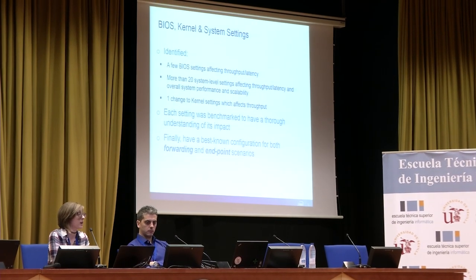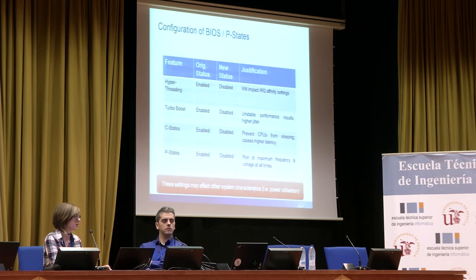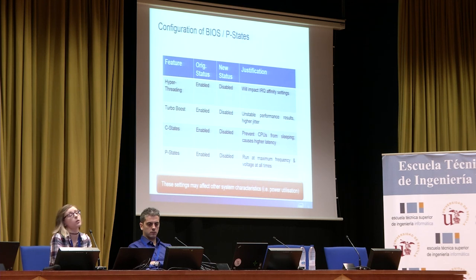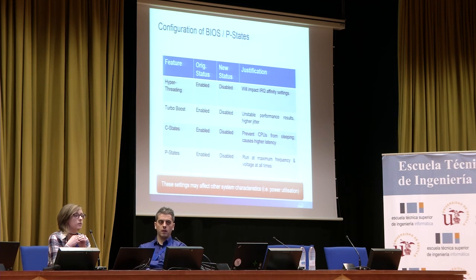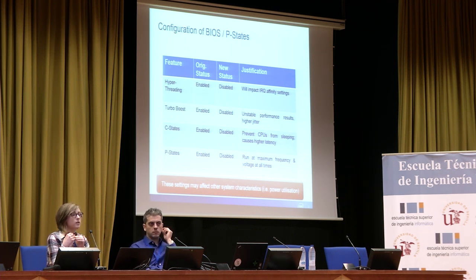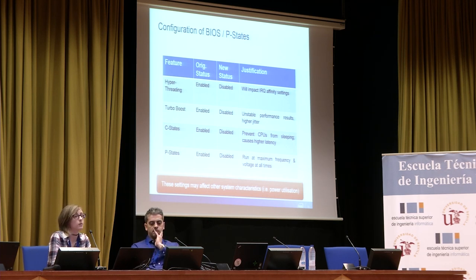There were a large number of BIOS, kernel, and system settings that improved our performance. In terms of BIOS, first we disabled hyperthreading — we were affinitizing each RX and TX port queue to one CPU, and the secondary logical core from hyperthreading meant the queue couldn't fully utilize its bound CPU. We disabled turbo boost because erratic frequency hikes lead to unstable results. We disabled C-states so CPUs wouldn't sleep, and disabled P-states so CPUs ran at maximum frequency and voltage at all times.